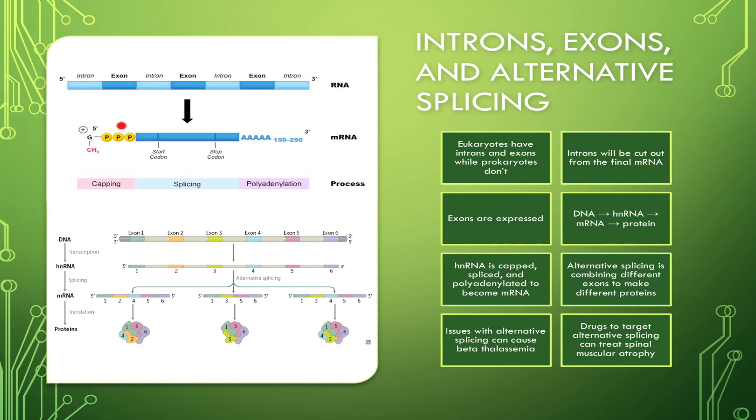So you can see here, it has the cap, polyadenylation, and the splicing, and then you can call it mRNA.